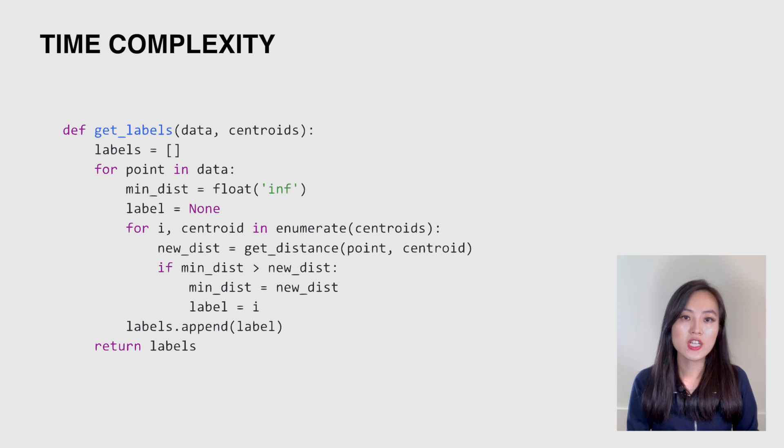Inside the while loop, for each call of getting labels, we have a double for loop. One goes through the data points and the other one goes through the centroids. So the time complexity is O(k × n).